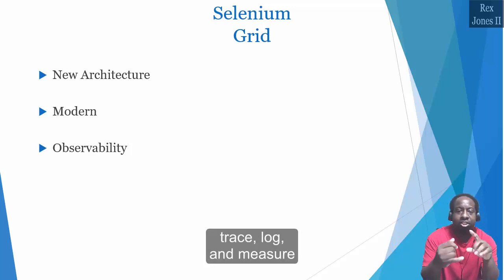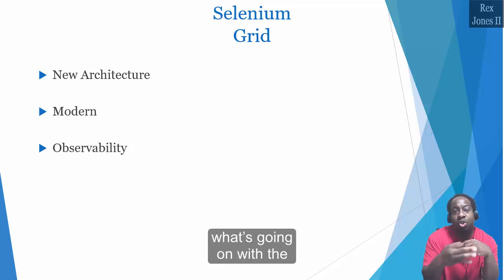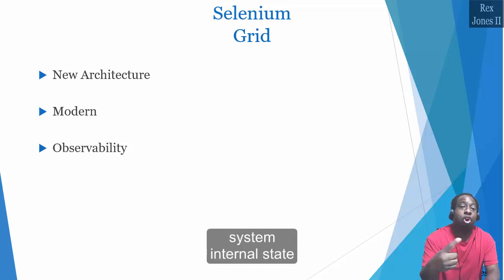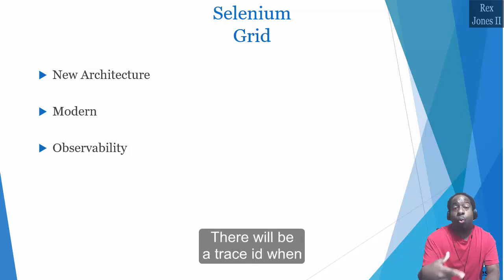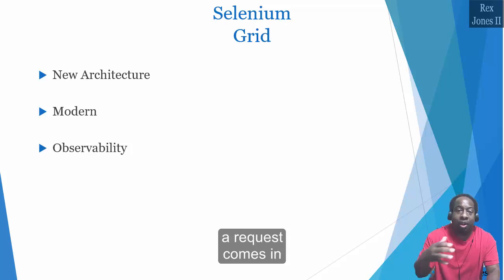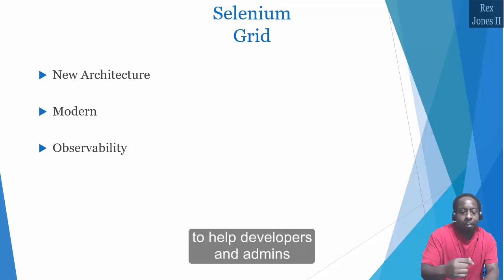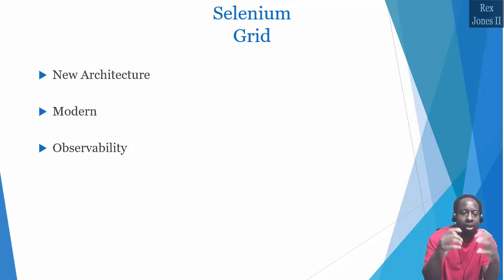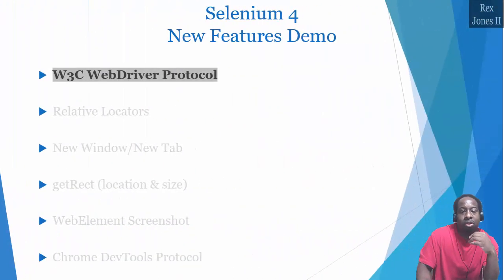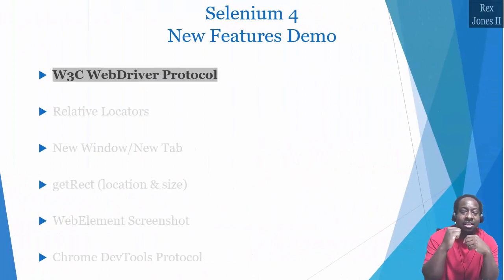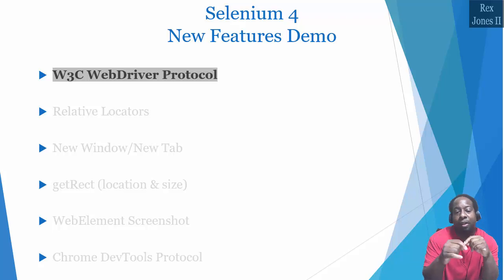Observability helps us to trace, log, and measure what's going on with the system's internal state. There will be a trace ID when a request comes in to help developers and admins debug a problem. That's it for the new features for Selenium Grid, and I will see you in the next session to discuss the new W3C WebDriver protocol for Selenium 4.